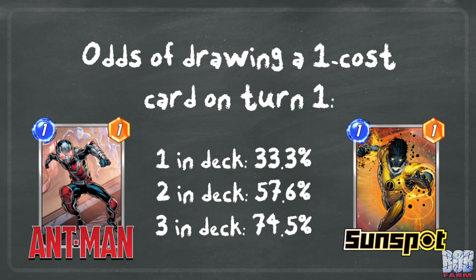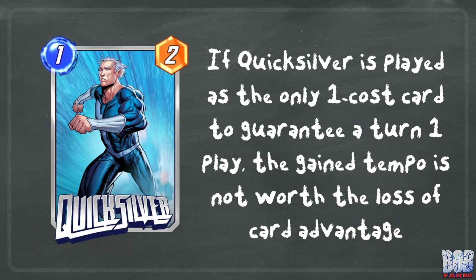If you are running another 1 cost card, you may just draw it on turn 1 anyways, negating any possible benefit of Quicksilver. The odds of drawing a 1 cost card on turn 1 with 1 in your deck is 33%, with 2 it goes up to 57.6%, and with 3 in the deck it goes up to 74.5%. 1 cost cards don't even need to be played on turn 1, as they can fit into future turns if you are not having a perfect energy curve. If Quicksilver is played as the only 1 cost card to guarantee a turn 1 play, the gained tempo is not worth the loss of card advantage. When we're first starting out in Marvel Snap, it feels good to always have a play on turn 1.